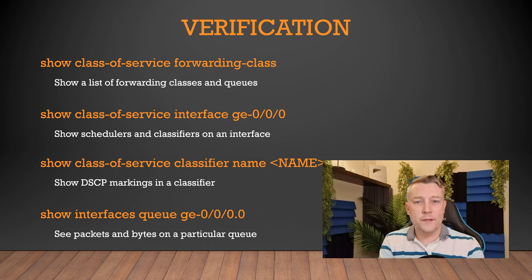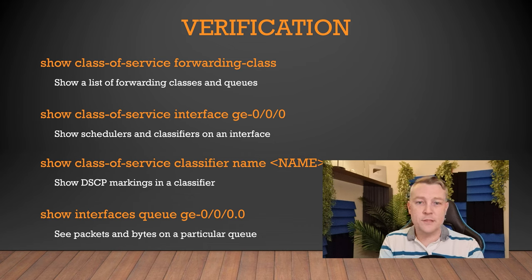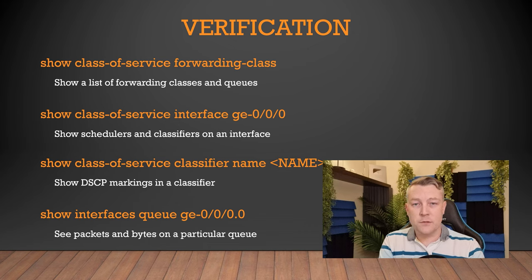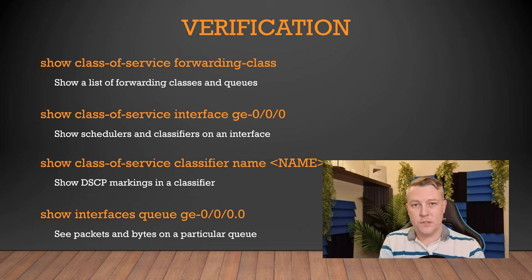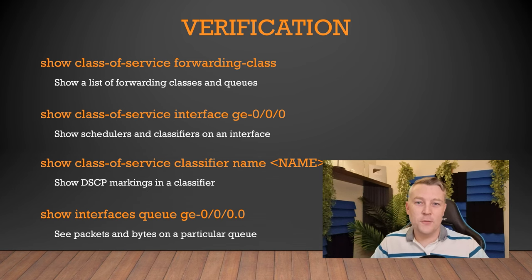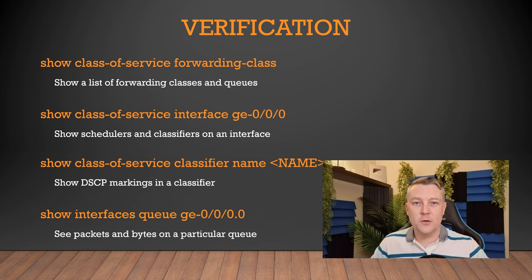I'm going to be making more videos on class of service with Junos — nice short videos I'm sure you'll find interesting. In particular we'll look at marking packets, drop profiles (also known as RED or WRED, random early detection), per-unit schedulers which are good for multi-unit or sub-interfaces, and virtual channels which are really important for IPsec tunnels. I hope to see you there, and I hope this has been useful — let me know what you thought in the comments.